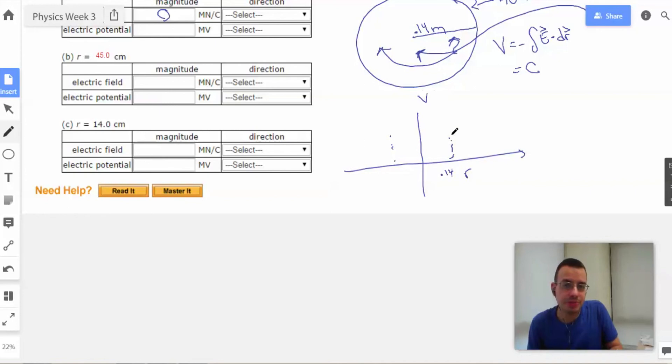Here's where our sphere ends at 0.14 meters. This is going to be the potential. The potential in here would be the same. And once you get outside of it, it's going to drop as KQ over R. So that would be like a 1 over R.